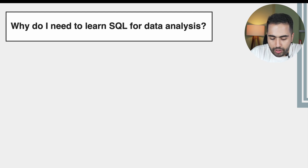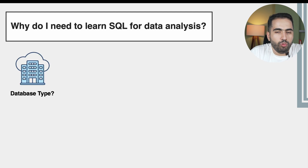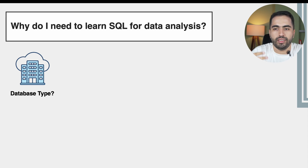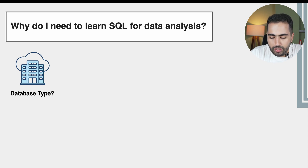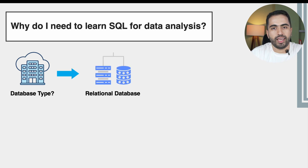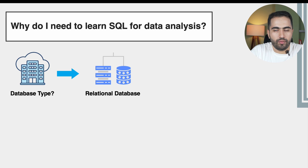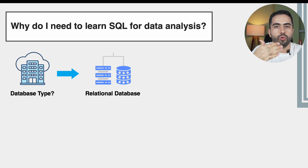The first question I'm going to ask is: do you know what database most companies use? I'm talking about web-based companies and web application companies. They are mostly using something called a relational database. A relational database is a structured way of storing data in rows and columns within tables that uses SQL for querying and managing that data. And relational databases are the most common type of database that nowadays most web-based companies are using.